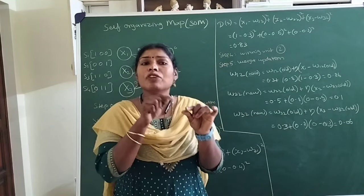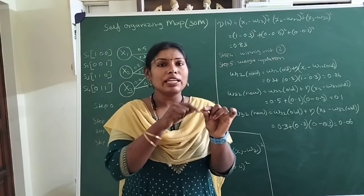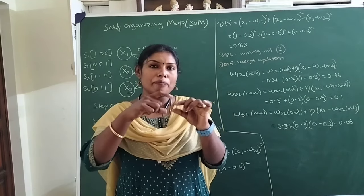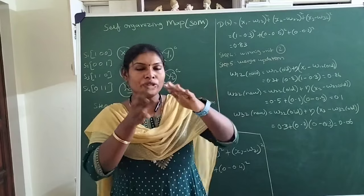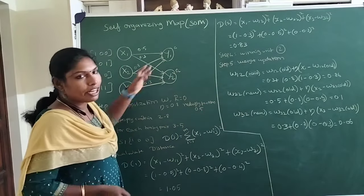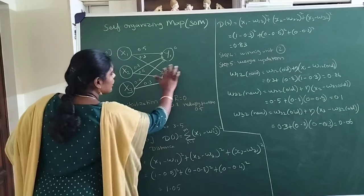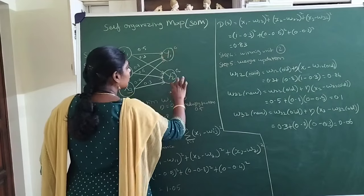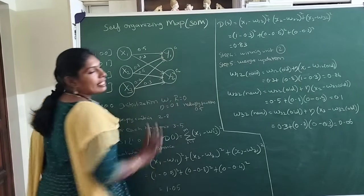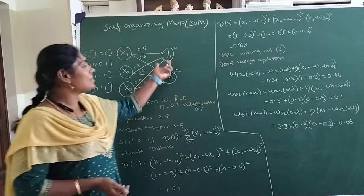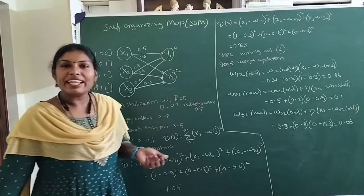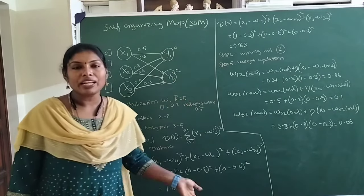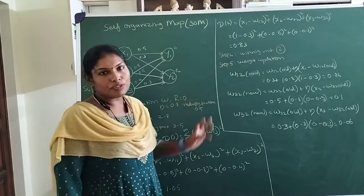We also have to consider the radius. There will be one winning unit and we try to update the weight of the links connected to the winning unit. Within a certain radius of clusters near to the winning unit, we take those also. For example, if C2 is the winning unit, I update the weight of the links connected to C2, and if I consider radius as 1, I consider the nearby clusters too and update all their links. In this example I just have two clusters, so I go ahead with a radius of 0. When you have more clusters, you can increase the radius.